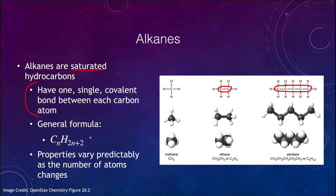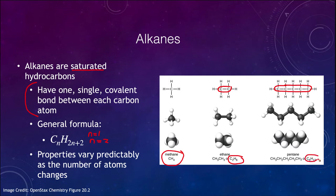Meaning if n is one, then there would be one carbon atom and 2 times 1 plus 2 equals 4 hydrogen atoms, giving you methane or CH4. If n was 2, you would then have 2 carbon atoms and 2 times 2 is 4 plus 2 more is 6, giving you ethane. And if you put n equal to 5 for pentane, then 5 times 2 is 10 plus 2 is 12, meaning pentane will have 5 carbon and 12 hydrogen atoms.